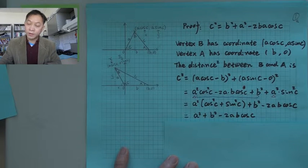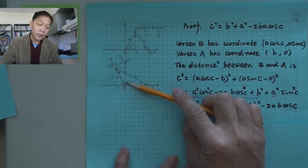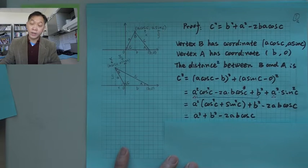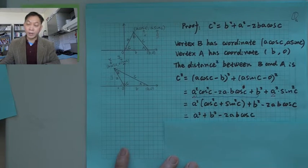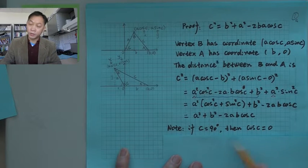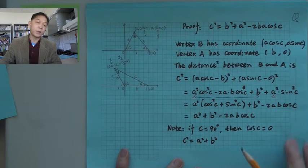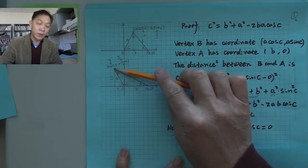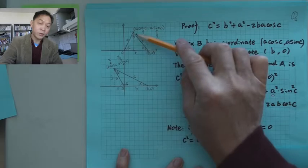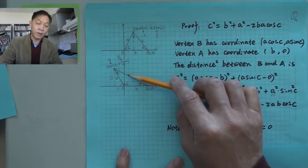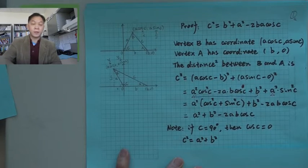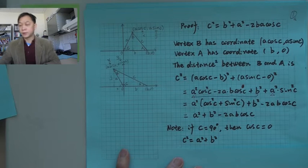There is a special case: what if angle C is 90 degrees? Cosine 90 degrees is zero, so the term minus 2ab cosine C disappears. Then what you have is c squared equals a squared plus b squared — that's the Pythagorean theorem. If this point is on the y-axis, you basically have a right triangle, and c is the hypotenuse. That's something we already knew before.